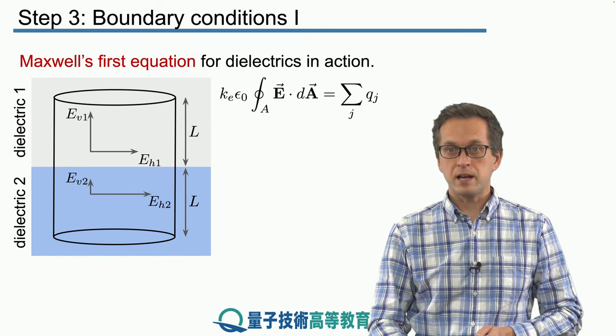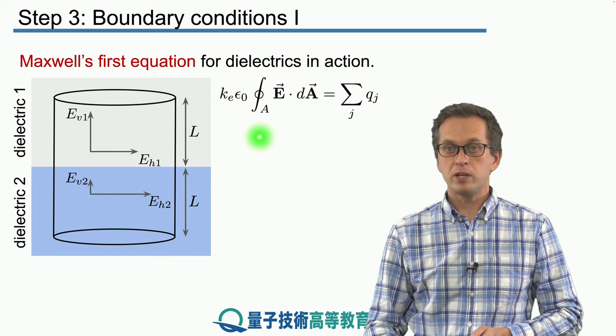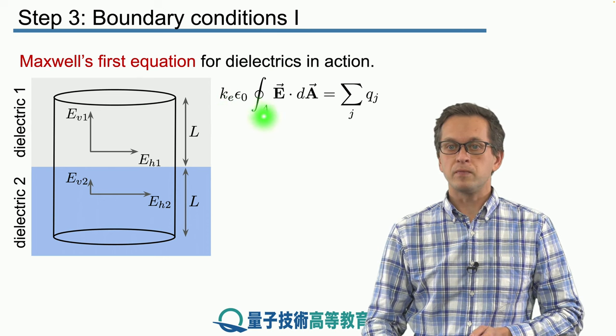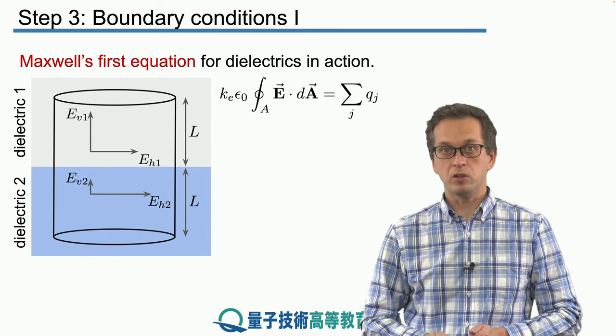So this is our equation M1, Maxwell's first equation, and we have rewritten it by multiplying both sides by Ke times epsilon naught.